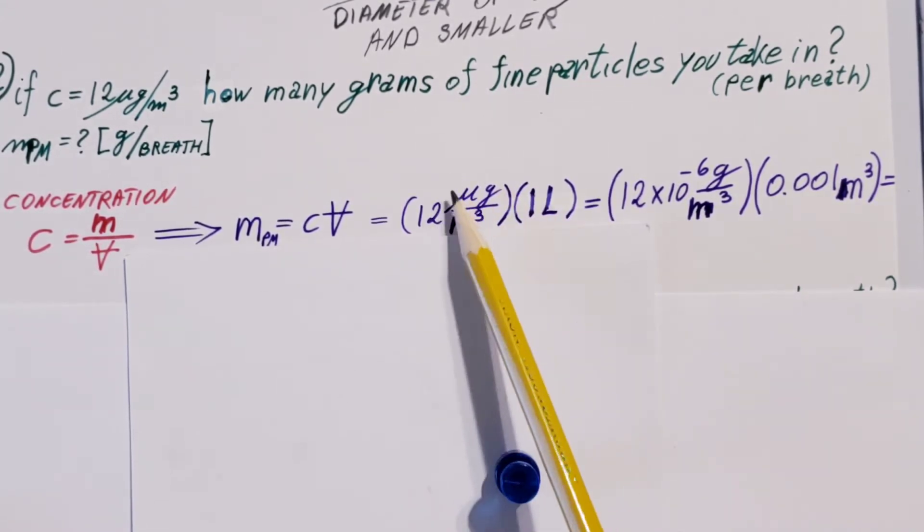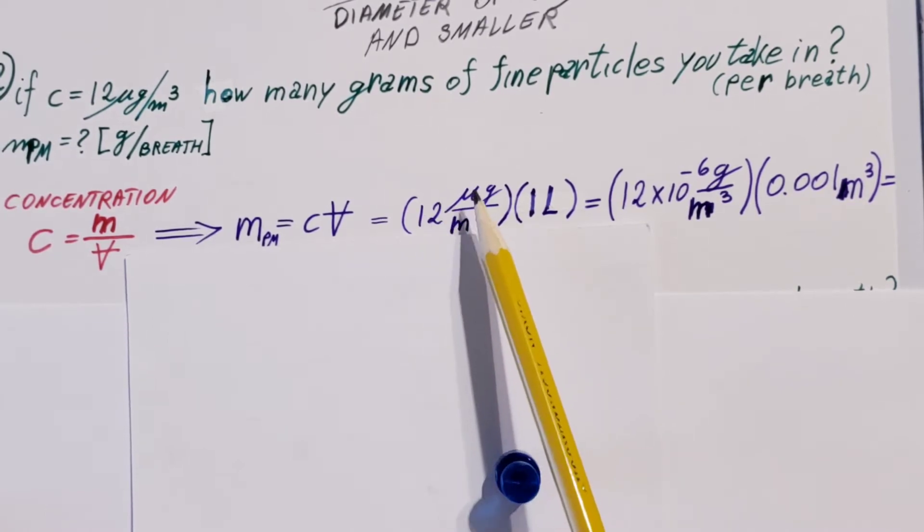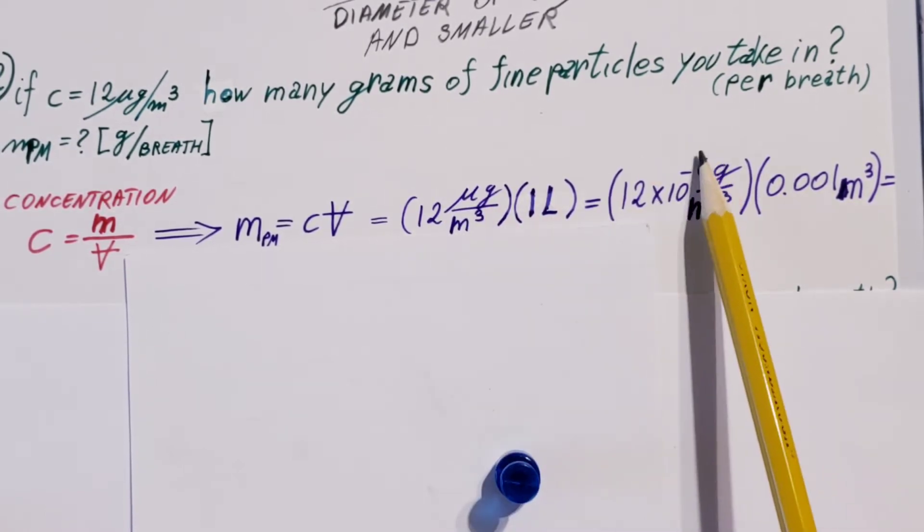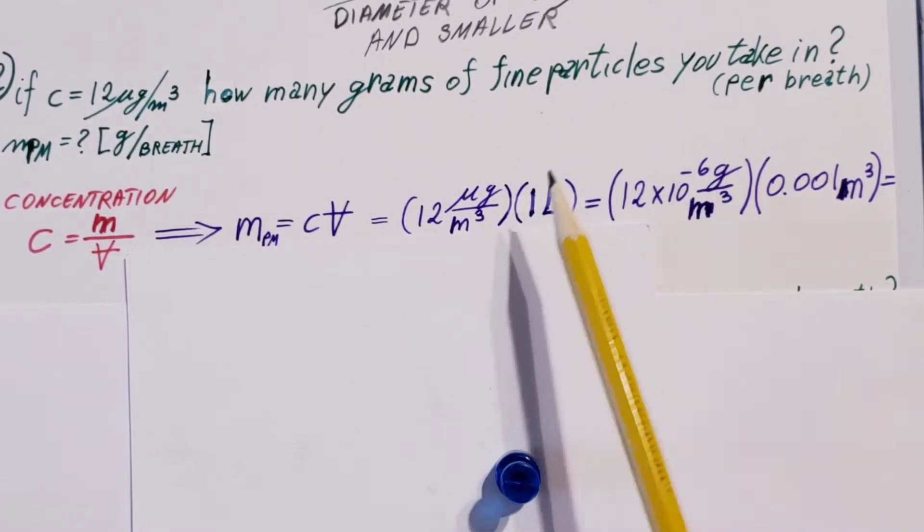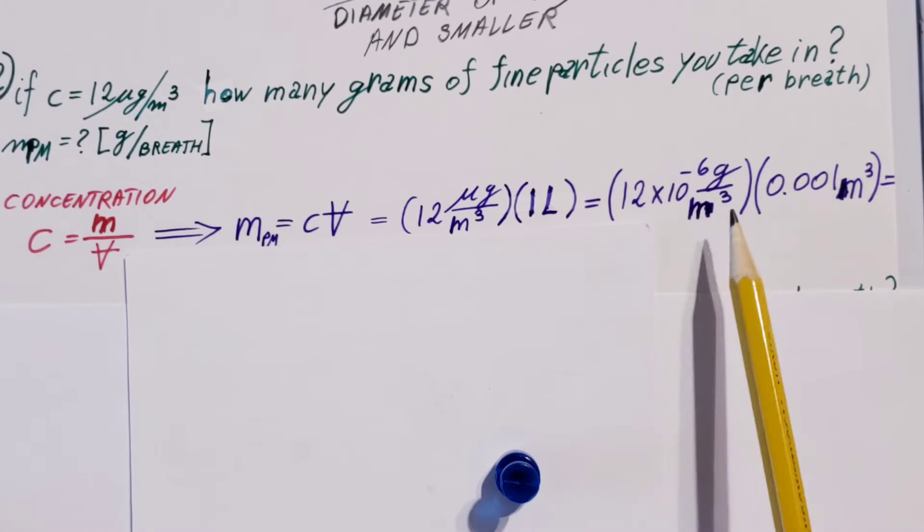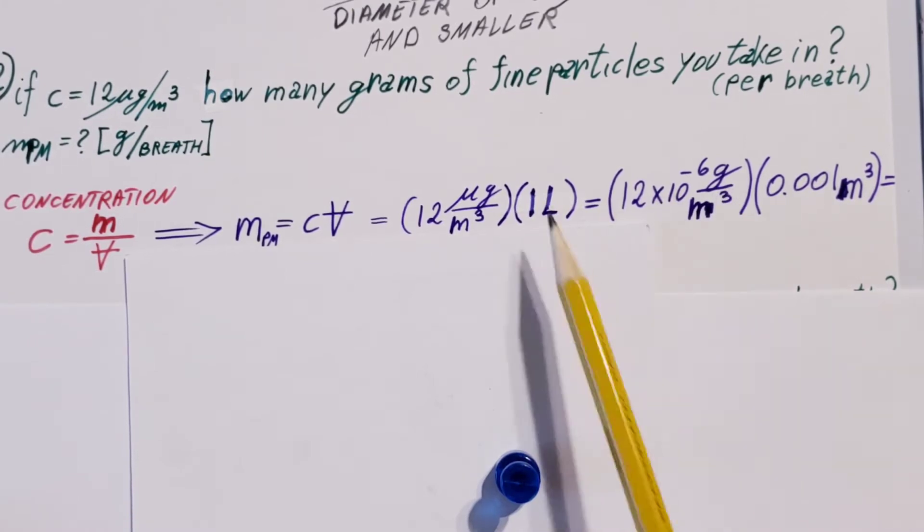We don't want the micron here, so the micron is 10 to the negative 6, that's what I plugged in. We have grams over meters cubed. Now the liter—let's convert that to meter cubed since they are both volume: 0.001 meters cubed.